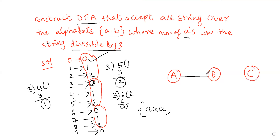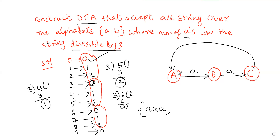Number of A's divisible by 3. So I draw state A, then on input 'a' go to state B, then on 'a' go to state C, then on 'a' go back to state A. It will be accepted when the number of A's is divisible by 3 — which is 3 A's — so the initial state and final state are the same. The input B, A, A, A is also accepted because the number of A's is divisible by 3.